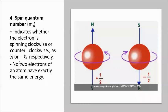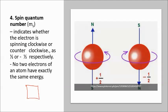The fourth quantum number is the spin quantum number, M sub-S. It indicates whether the electron is spinning clockwise or counterclockwise, with values of −1/2 or +1/2. In an orbital box diagram, two electrons can occupy one orbital with opposite spins — one arrow up and one arrow down.